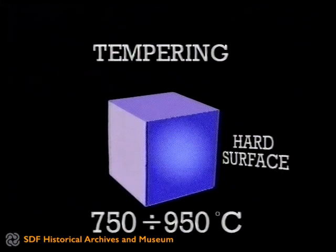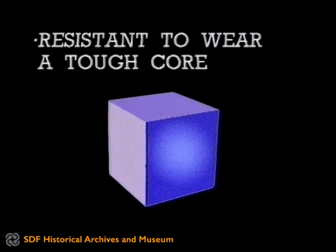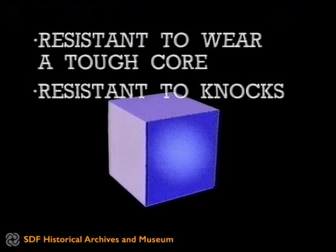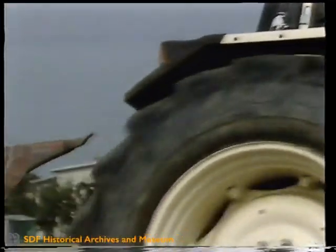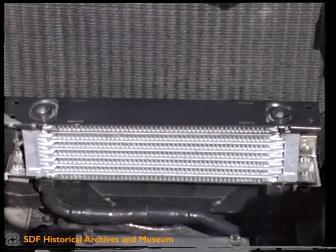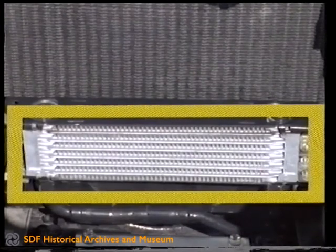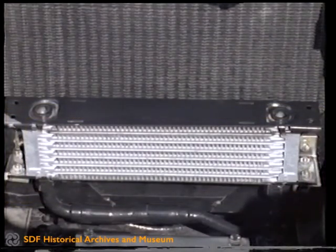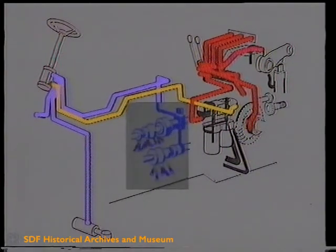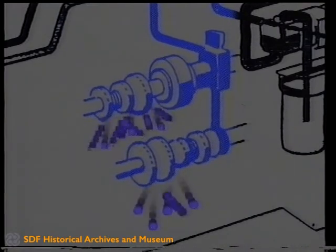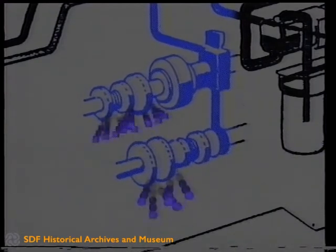Thus, parts are obtained which are extremely hard on the surface — hence resistant to wear — and at the same time have a tough core resistant to knocks. The gearbox is lubricated and cooled by oil. In the medium range models from 80 and 90 horsepower, and in the high range from 130 horsepower upwards, the gearbox lubrication circuit is also provided with an oil cooler, giving a gearbox free from wear and overheating. The physical-chemical characteristics of the oil are maintained for optimal lubrication. Because of the pressurized lubrication, it has been possible to further reduce the number of parts by eliminating the bushings between the shaft and the gearing, since the presence of the necessary film of oil is ensured by the grooving in the shafts themselves.